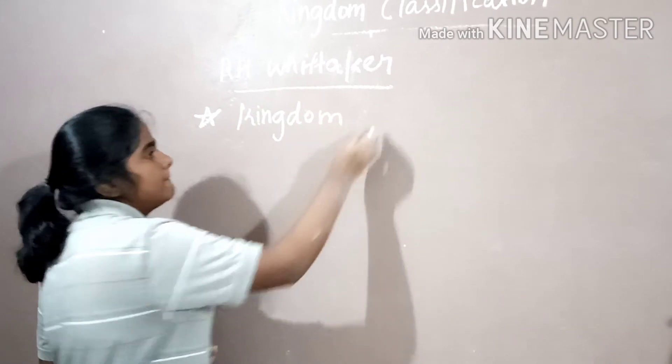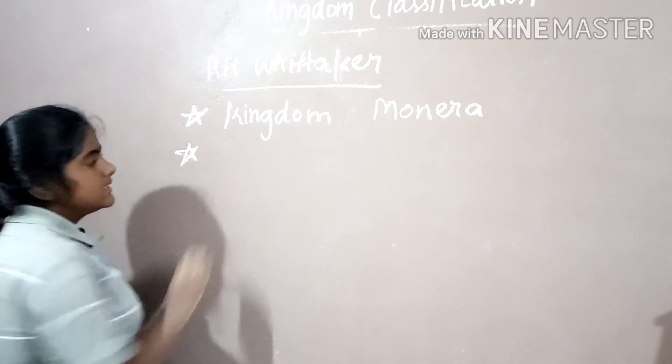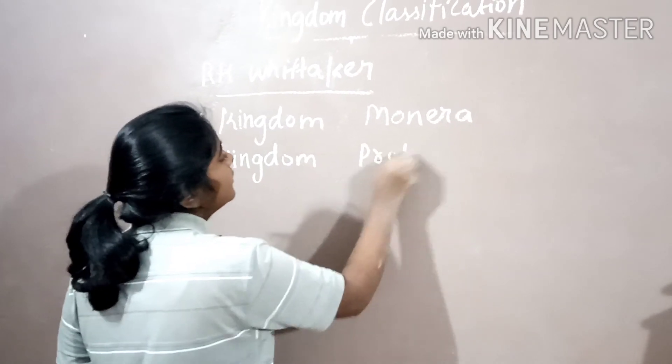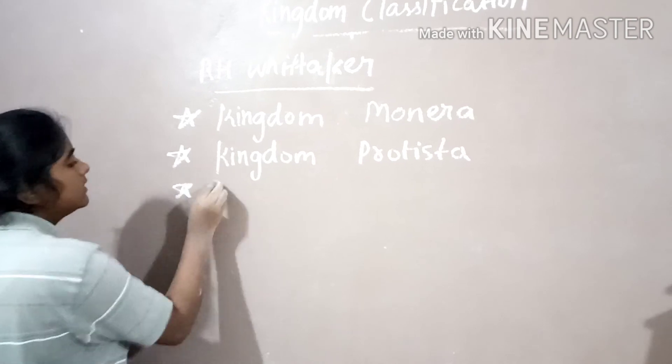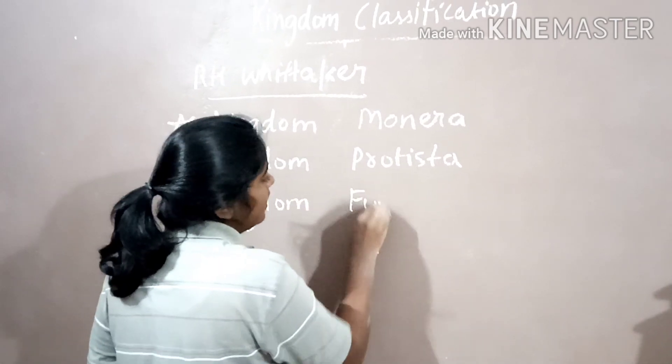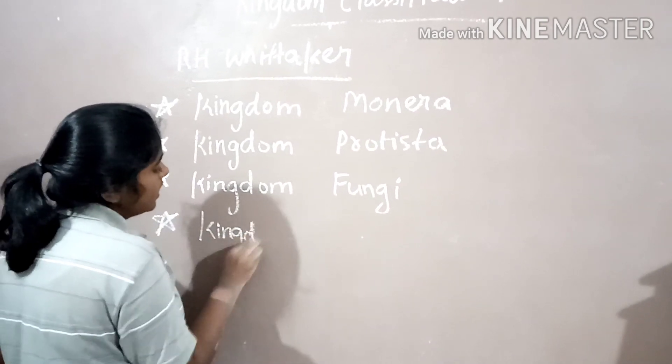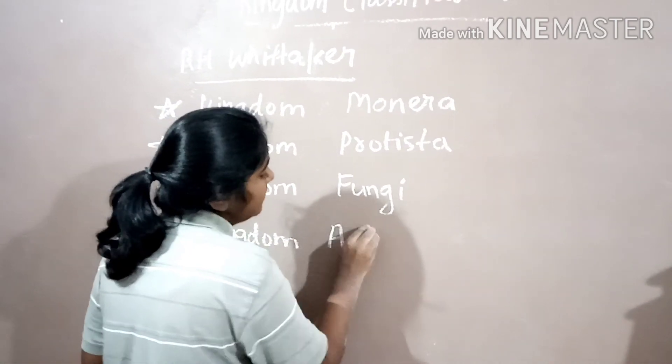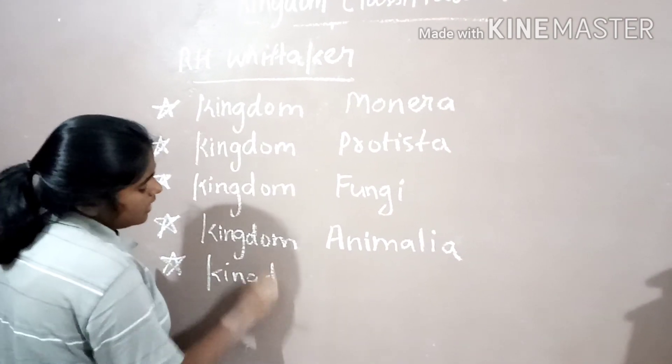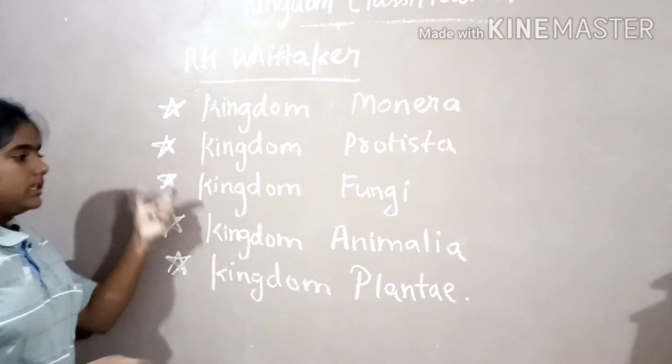The first is kingdom Monera. Second is kingdom Protista. Third is kingdom Fungi. Fourth is kingdom Plantae. Fifth is kingdom Animalia. So these are the five kingdoms proposed by R.H. Whittaker.